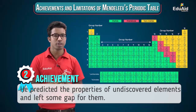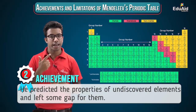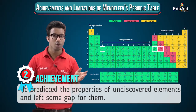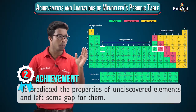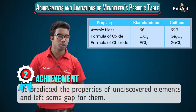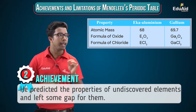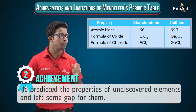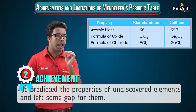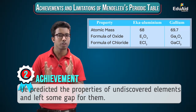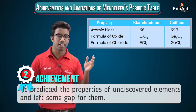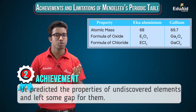Later, when the modern periodic table was developed, it was observed that the properties predicted by Mendeleev for Eka-boron, Eka-aluminium, and Eka-silicon matched Scandium, Gallium, and Germanium. These three elements were not known when Mendeleev gave his periodic table. For example, Mendeleev predicted that Eka-aluminium would have an atomic mass of 68, an oxide formula of E₂O₃, and a chloride formula of ECl₃.